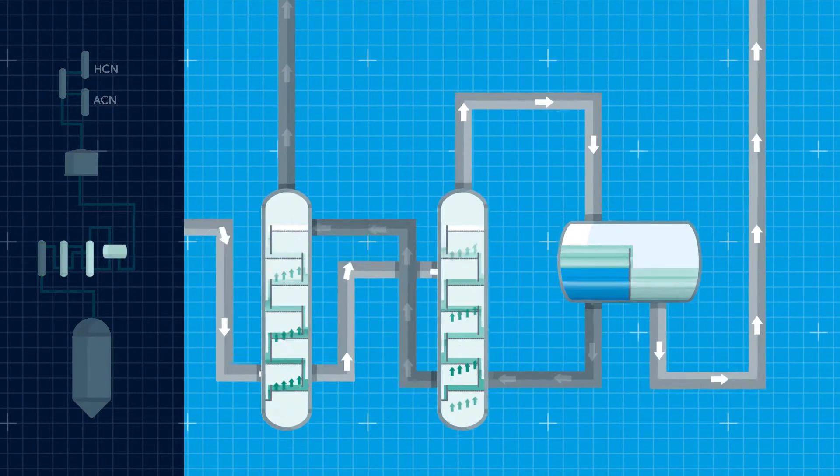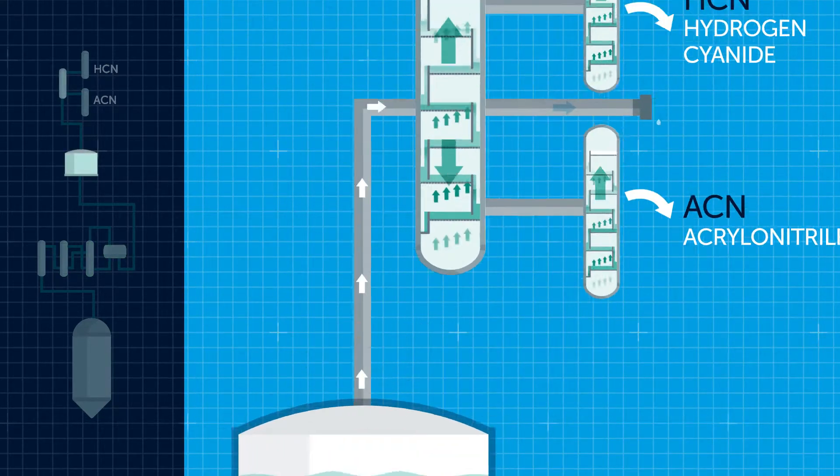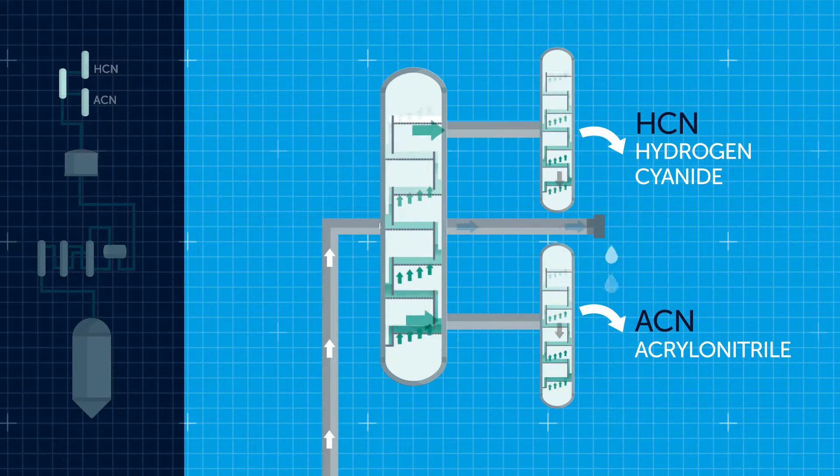Next, the gas passes through several further stages until eventually acrylonitrile and hydrogen cyanide remain as pure end products.